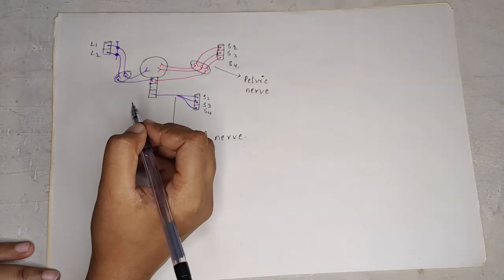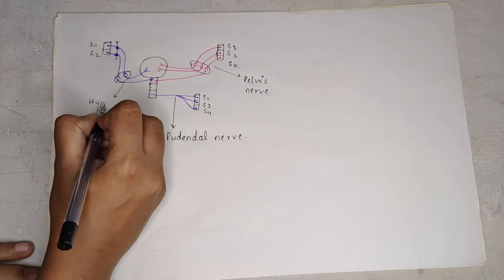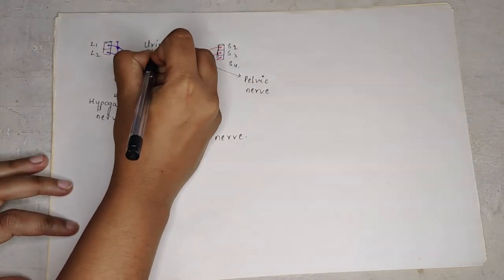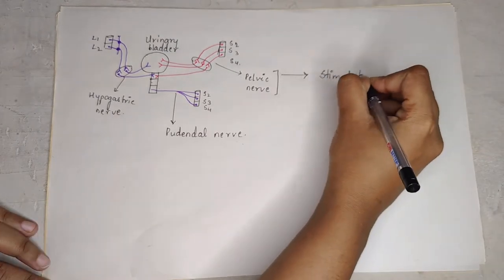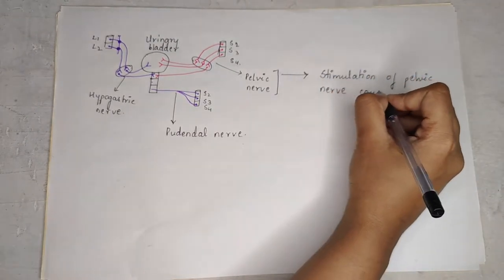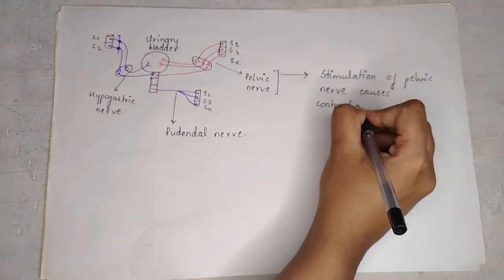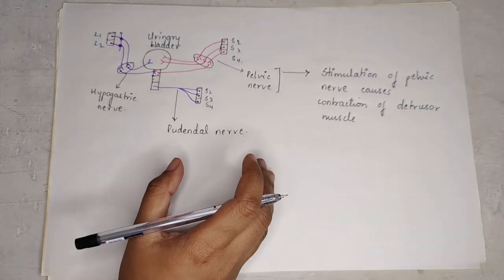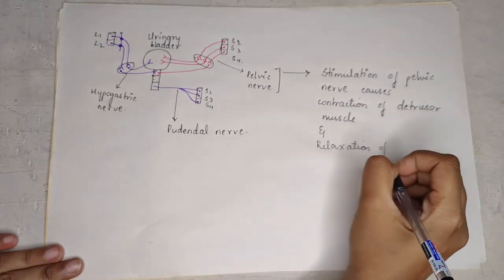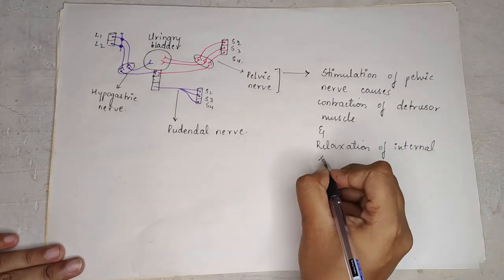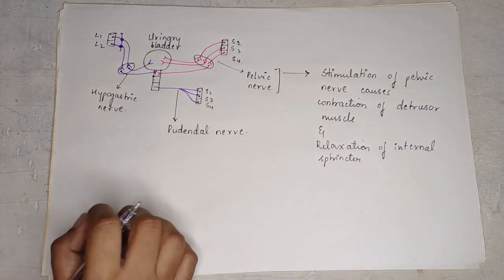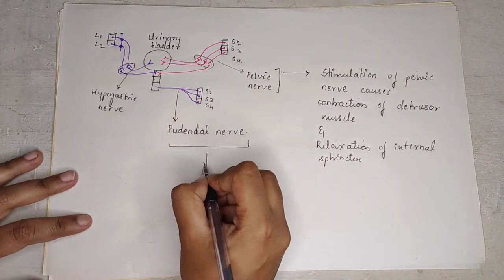Thus, the nerves involved are the pelvic nerve, pudendal nerve, and hypogastric nerve. Stimulation of the pelvic nerve causes contraction of the detrusor muscle and relaxation of the internal sphincter, so that urine passes to the outside.